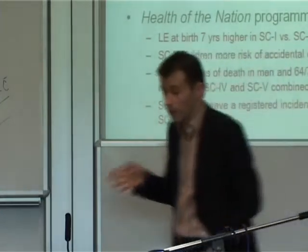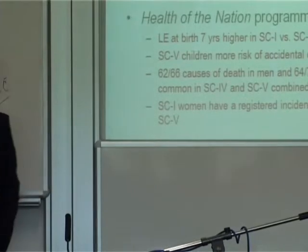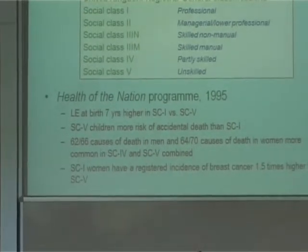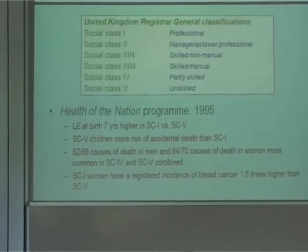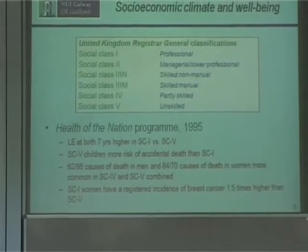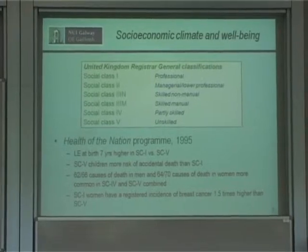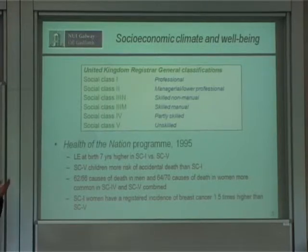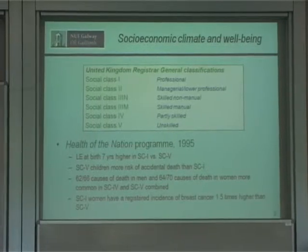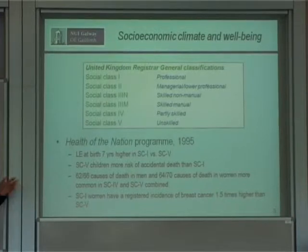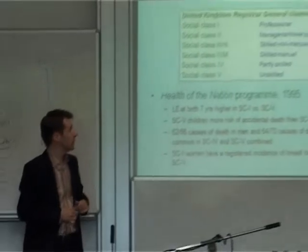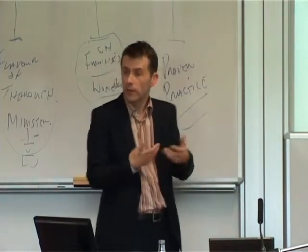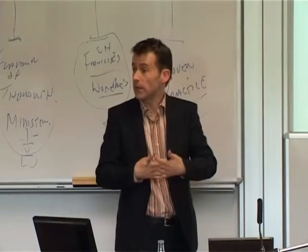A more contemporary version of this relates to how social class is classified. This is the UK version — a very similar version is used in the Republic of Ireland and the Central Statistics Office in the National Census. It's intended to be an ordinal scale, where number one has a greater amount of something than number two and so on. Life expectancy at birth in 1995 was still seven years higher at the top of the scale compared to the bottom. So greater sophistication in our analyses doesn't make all these problems disappear — these factors apply in contemporary society, not just the 19th century.